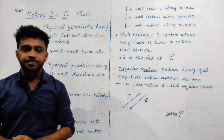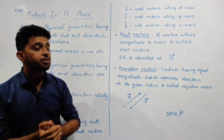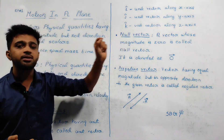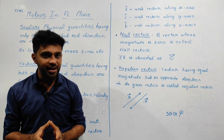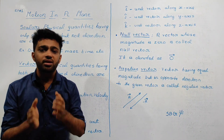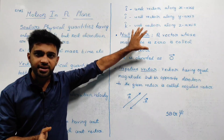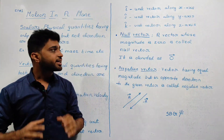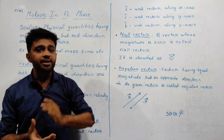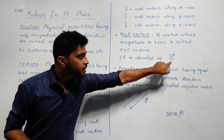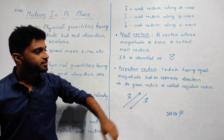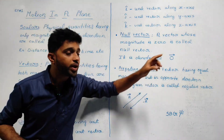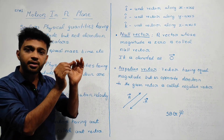Now, the null vector. A vector whose magnitude is 0 is called a null vector. It is denoted by a zero vector — written as 0 with an arrow mark, which is the vector symbol.